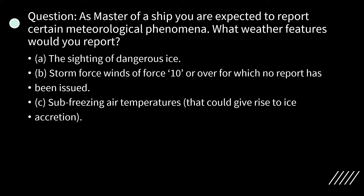The third thing you have to report is if you encounter sub-freezing air temperatures that could result in ice accretion on your ship. Ice accretion is when ice gets collected on your ship's structure, especially the superstructure or upper deck, which may lead to stability issues. If you encounter sub-freezing air temperatures leading to or that could lead to ice accretion on your superstructures, you must report it to the appropriate authorities. These are the three meteorological phenomena you would report as a master.